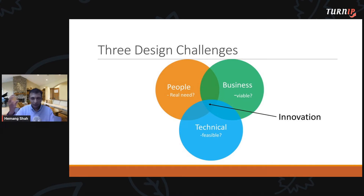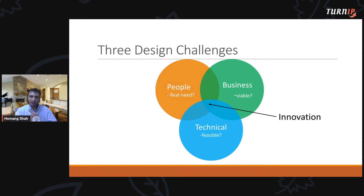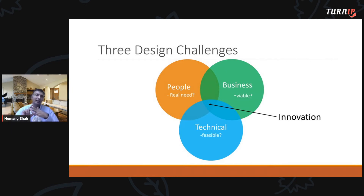This framework is quite simple. There are three primary criteria you need to look at, and I call them people, technical, and business — strictly in that order. First we'll look at the people segment, then the technical segment, and then determine if there is any business potential. Only if you meet those three challenges should you embark further on that journey.